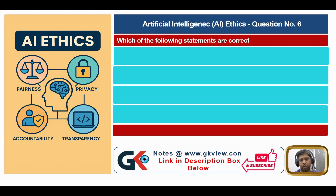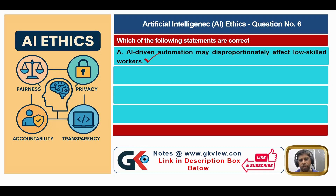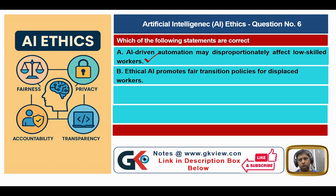Question number six: which statements are correct? Statement A: AI-driven automation may disproportionately affect low-skilled workers — this is true because low-skilled workers will be affected. Statement B: ethical AI promotes fair transition policies for displaced workers — if an employee is displaced, they should be moved to a safe position; this is also true.